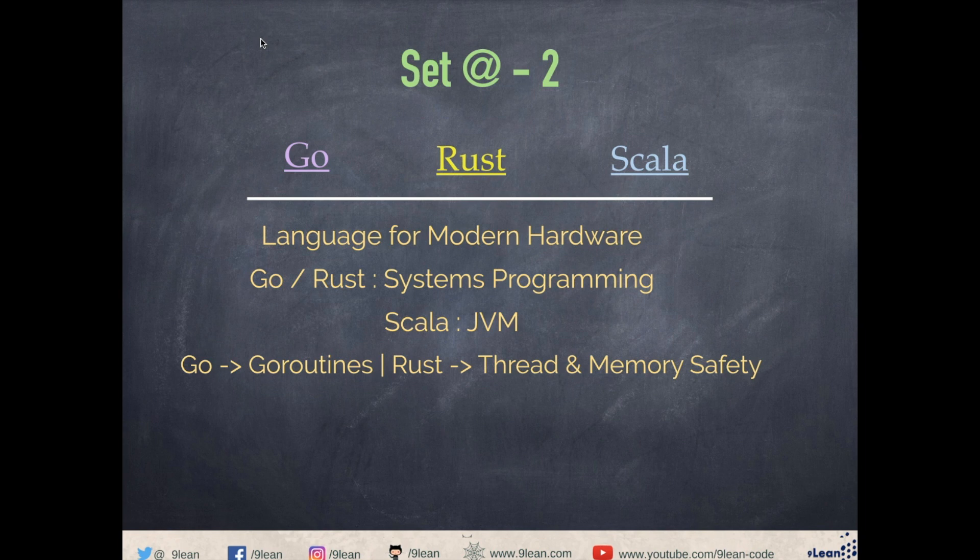While Go and Rust take care of system aspects, Scala takes care of big data. Almost all our programs will take a cue from big data tomorrow, so we cannot imagine any program without having big data capability in it. Apache Spark, one of the major players in big data, is written using Scala. Though it has different types of plugins available in different languages, it's good to know Scala because we can do many more things compared to other programming language plugins.